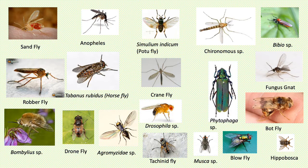Here are pictures of a few dipterans from different families. The sand fly is from family Psychodidae. Anopheles is from family Culicidae. Simulium indicum is from family Simulidae. Chironomus species is from family Chironomidae. Bibio species — commonly known as love bugs or march flies — is from family Bibionidae. Family Cecidomyiidae includes gall midges.